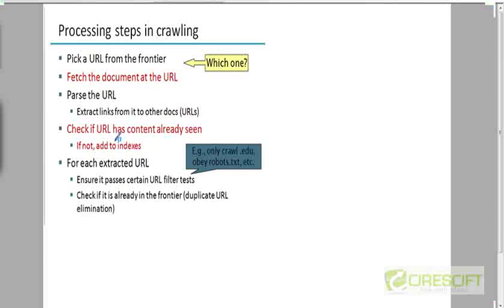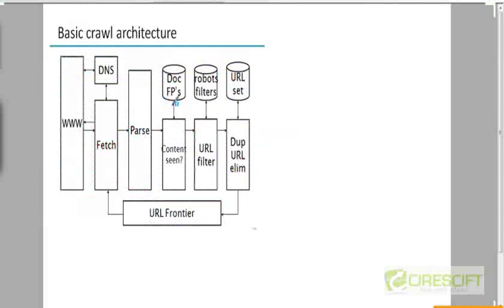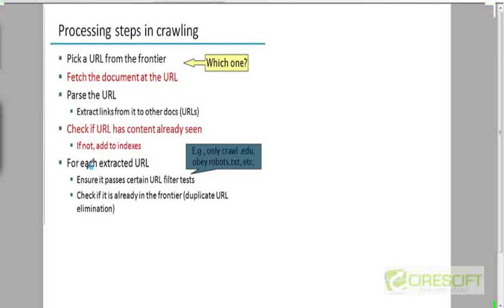If you have not seen this document before, you will send it into the indexing pipeline. You will also extract the links from that document and add them to your URL frontier — but you won't directly push them in. There are a couple more steps.